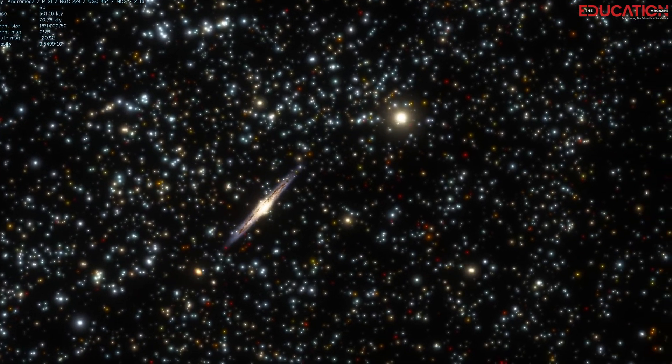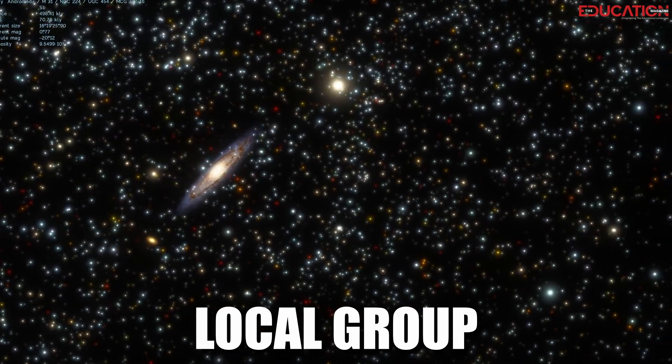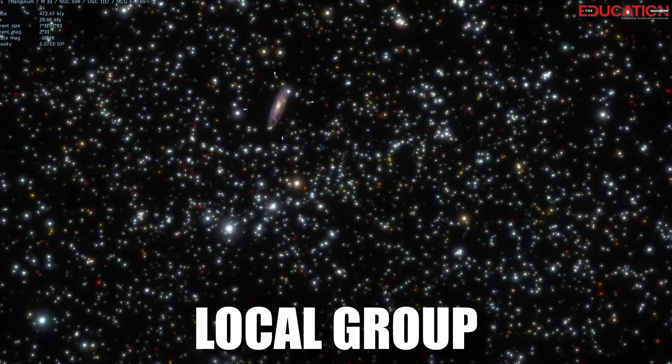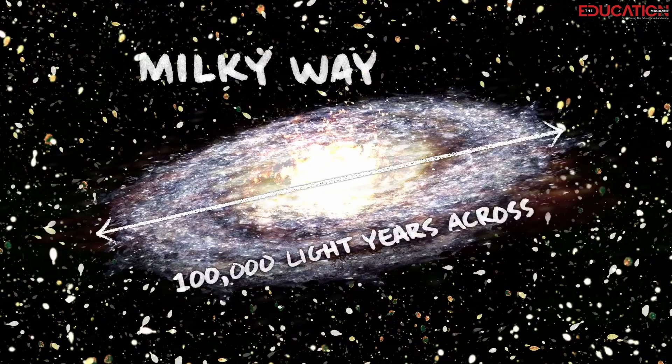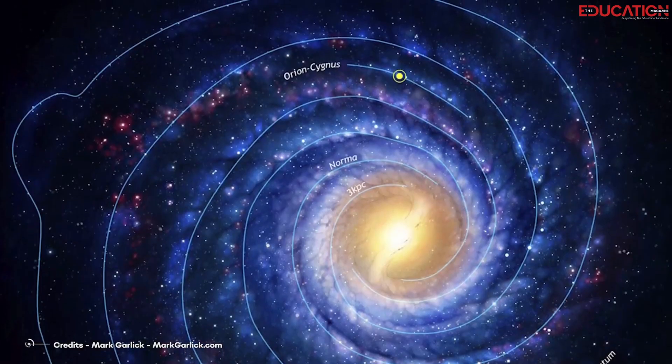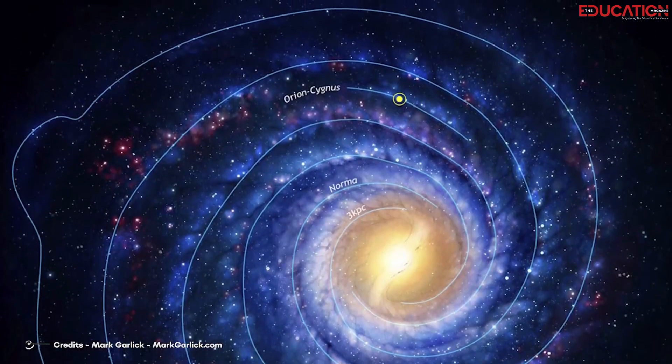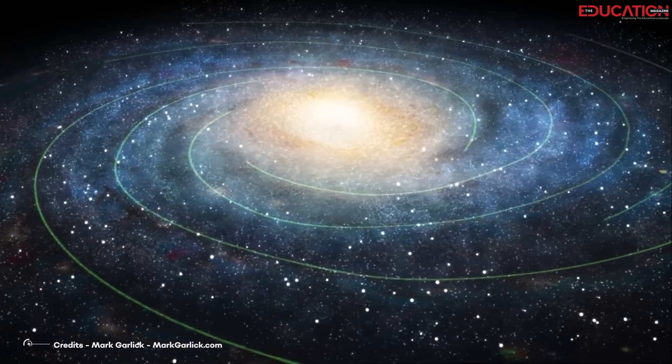The Milky Way is part of a group of galaxies called the Local Group, which contains about 54 galaxies. The Milky Way is about 100,000 light-years across. The Orion Arm is about 20,000 light-years across, and about 100 billion stars are in the Milky Way.